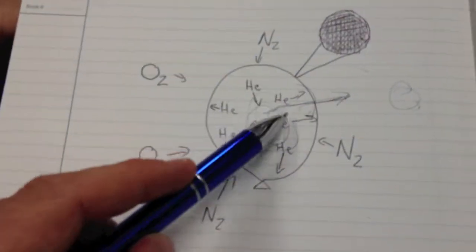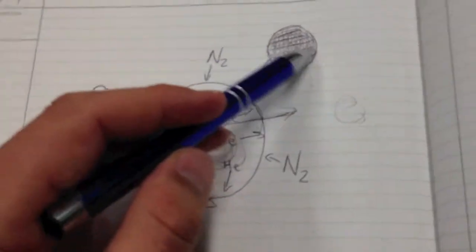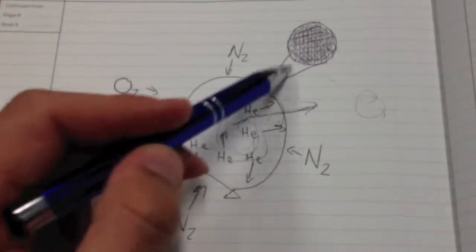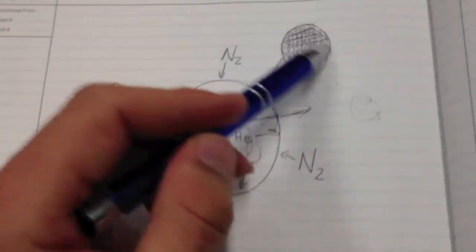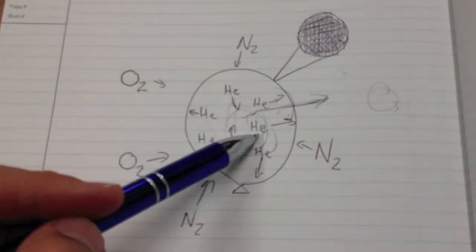Now why it slowly deflates is because you're going to get more helium going out than you're going to have oxygen and nitrogen going in. Because we've got these small gaps. So we have helium being able to fit through more of the small gaps than nitrogen or oxygen. Because nitrogen and oxygen might only be able to fit through half the gaps, whereas helium can fit through all the gaps.